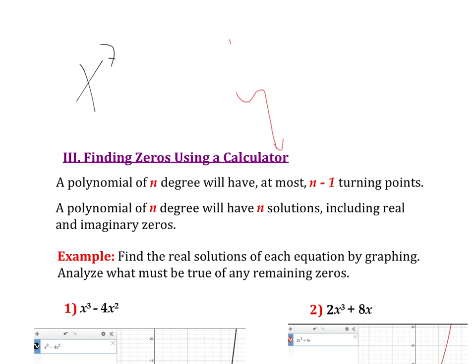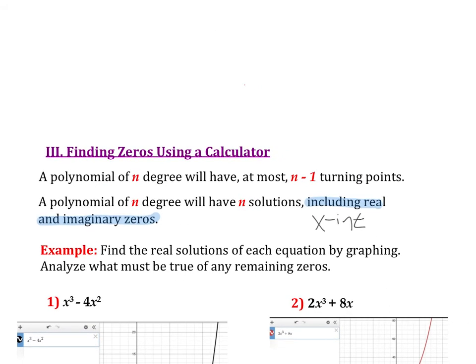The next thing says that a polynomial of nth degree will have n solutions — n roots — including real and imaginary. What this means is if I have x to the third power, I'm going to have three solutions. If I have x to the fourth power, I'm going to have four solutions. If I have x to the 18th power, I'm going to have 18 solutions. Now, most of the time solutions will manifest as x-intercepts. If they don't manifest as x-intercepts, then they're going to be imaginary. So if they show up on the graph as x-intercepts, they're going to be real solutions. If they don't show up as x-intercepts, they're imaginary.